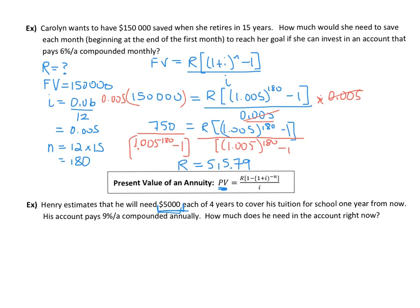Henry estimates that he will need $5,000 each of four years. So that actually is the regular payment he wants to receive every year for four years to cover his tuition for school one year from now. So he wants to start paying himself one year from now. So that's at the end of the first year, end of the second year, end of the third year, end of the fourth year. His account pays this percent compounded annually. How much does he need to put in that account right now? So it can sit there, earn interest, and then he's going to make withdrawals from that account.